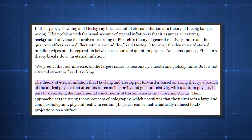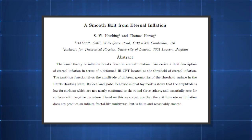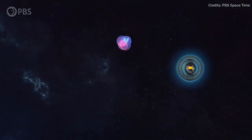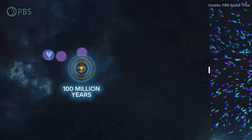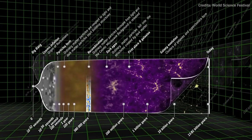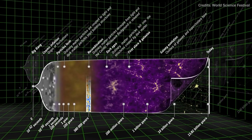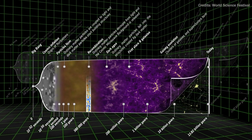Hawking's final research paper, written with Thomas Hertog and published just 10 days before his death, was about the multiverse. The paper, named A Smooth Exit from Eternal Inflation, proposed that the rapid expansion of space-time following the Big Bang repeatedly occurred, resulting in many universes. This was an extension of inflation theory, the widely held belief that the Big Bang didn't actually begin.